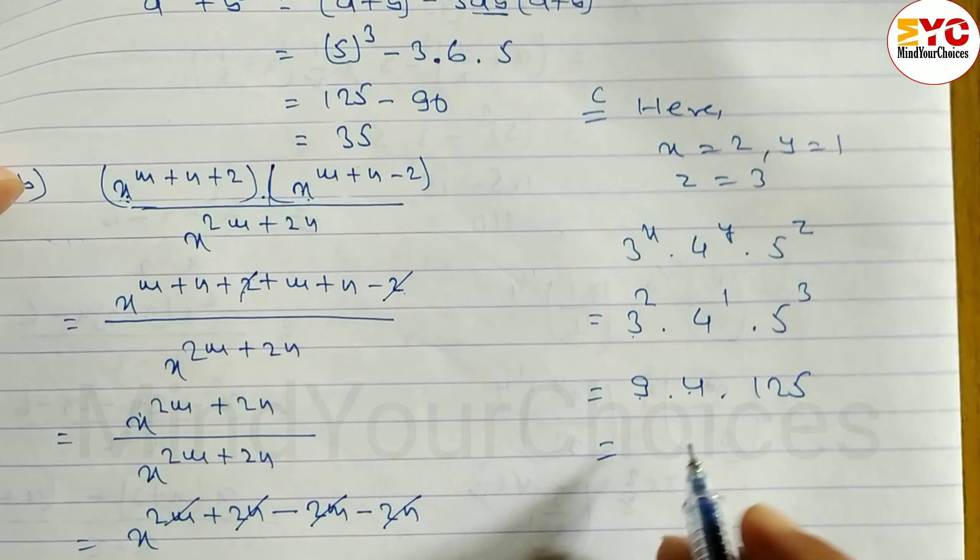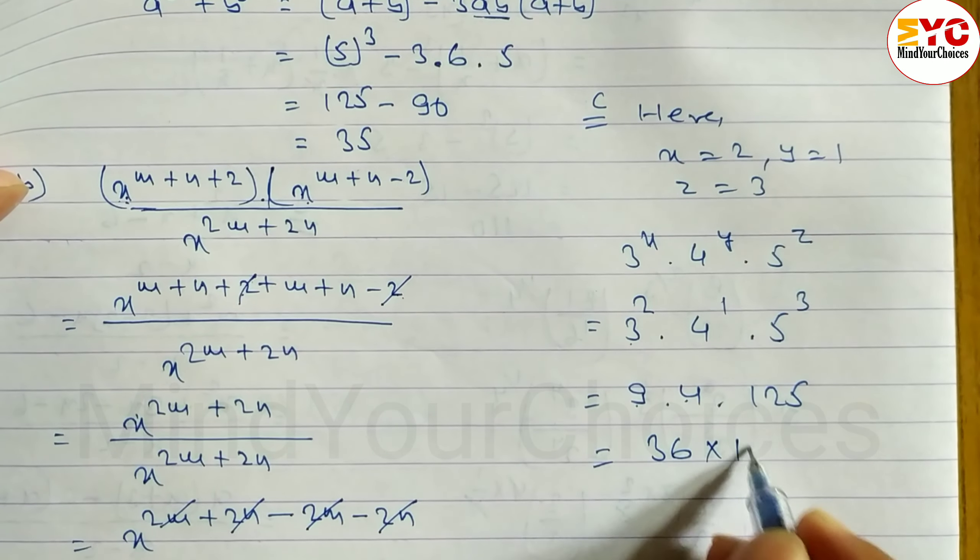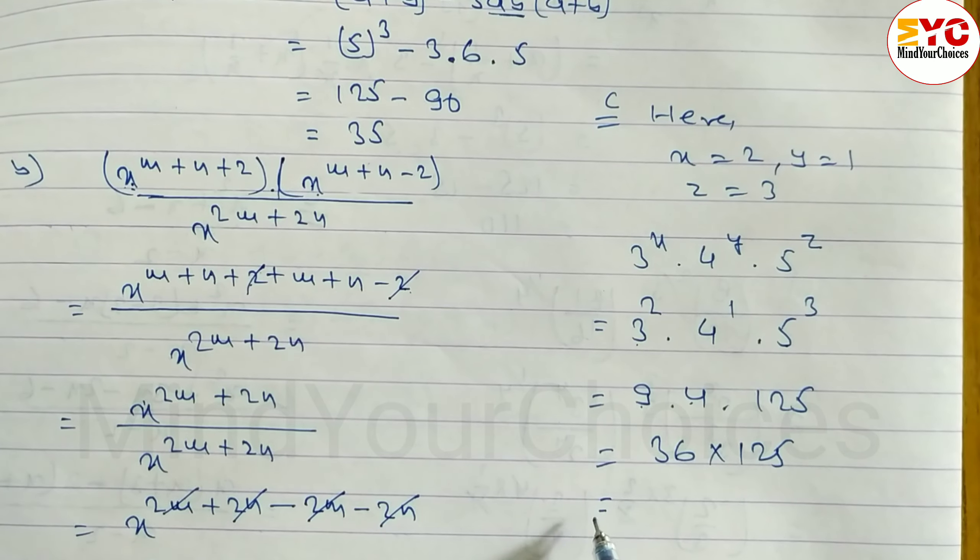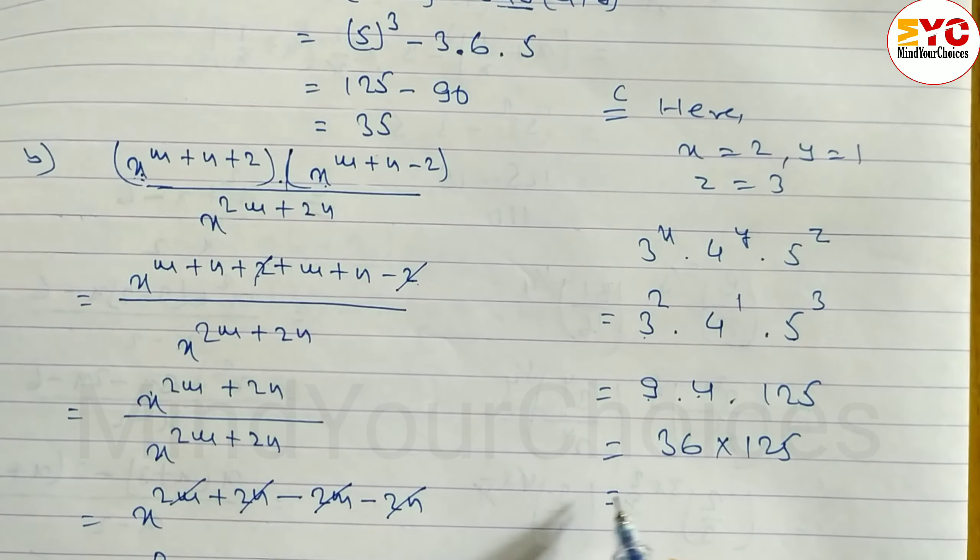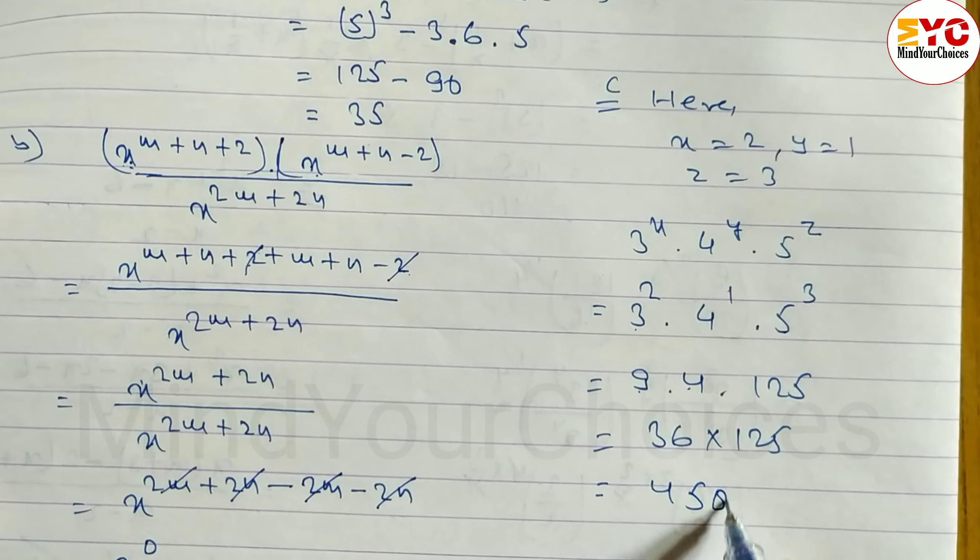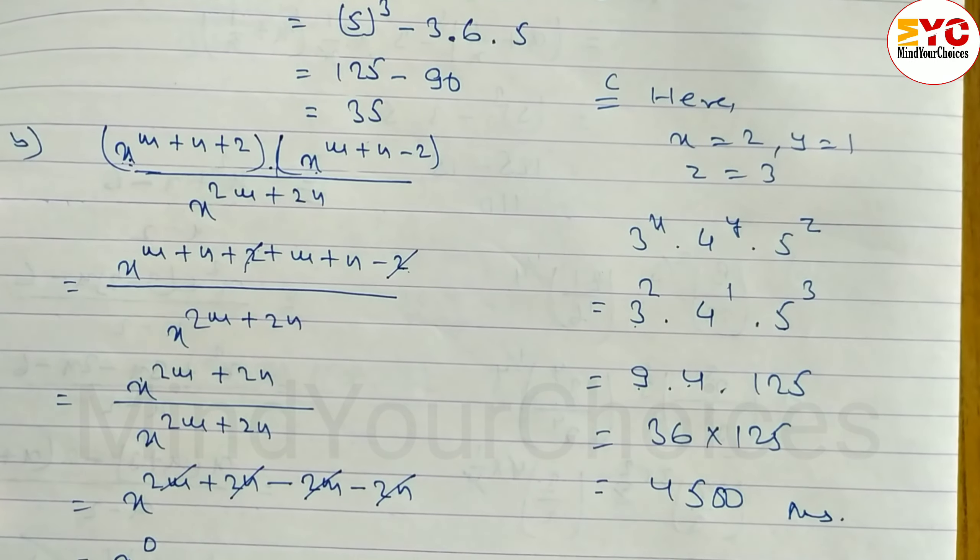Now just calculate: 4 nines is 36 into 125. Just multiply this, we get 4500 is your answer.